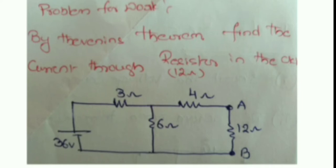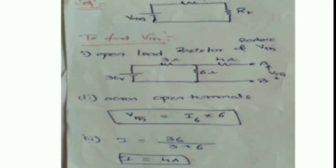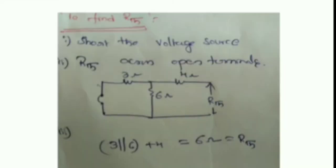The next example: by using Thevenin's theorem, find out the current through the resistor in the following circuit. Here 36 volts is given — that means a voltage source has been replaced. You need to find the current through the 12-ohm resistor. In Case 1, open the RL. Then find V_Thevenin equal to current multiplied by 6 ohms. The current is equal to 36 divided by (3 + 6), giving I equal to 4 amperes. To find R_Thevenin, short-circuit the voltage source; then the resistors are connected in parallel, giving R_Thevenin equal to 2 ohms.